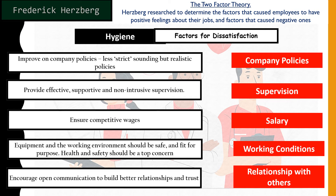For relationship with others, encourage open communication to build better relationships and trust. These factors, when improved — less stringent policies, reduced micromanagement, competitive pay — help remove the negative feelings employees have about the job. Being paid according to what they can deliver removes dissatisfaction; they feel satisfied but it doesn't directly mean they'll be motivated to be high achievers. Having it makes them feel okay — no longer dissatisfied, but not necessarily happy.